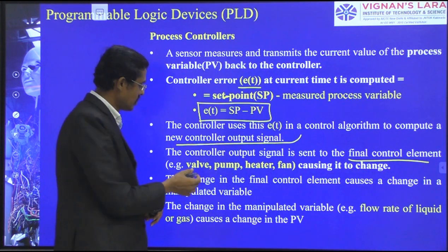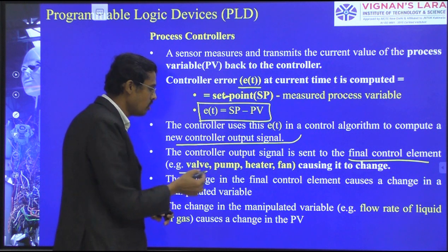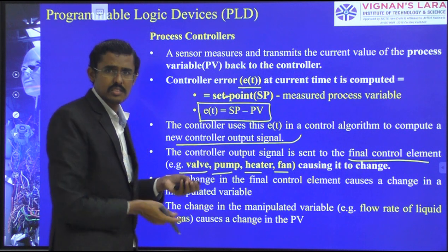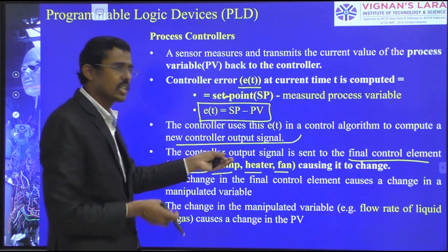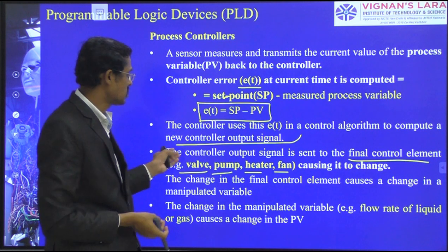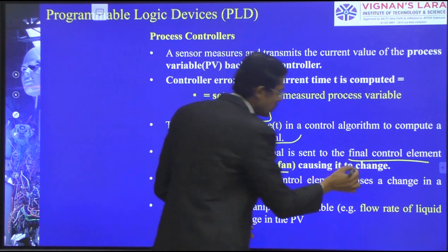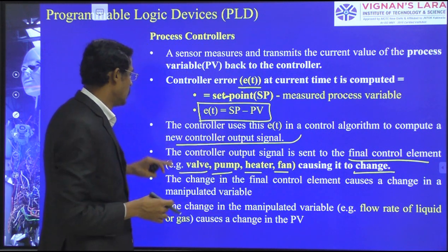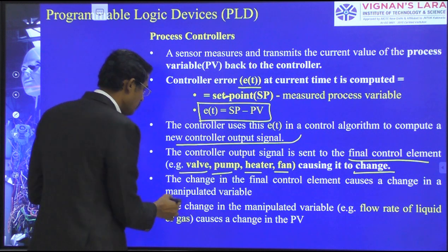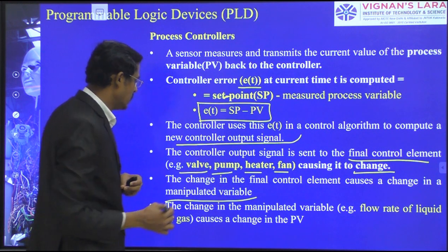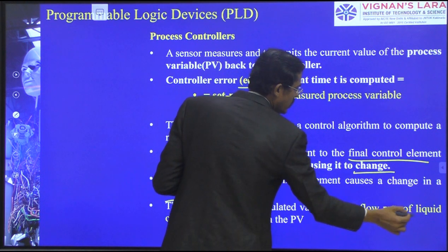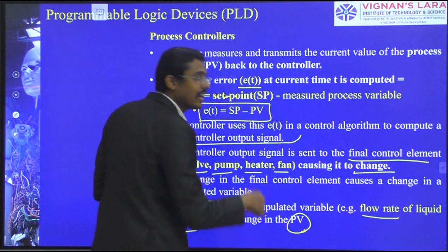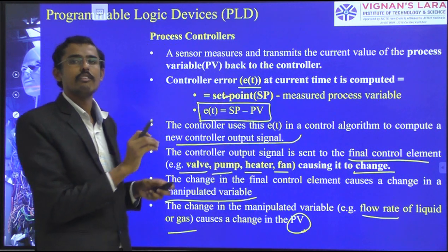The controller output signal is sent to the final control elements in the plant — such as valves, pumps, heaters, fans, cylinders, pistons, or ignition systems — to control speeds and other variables. This causes a change in the manipulated variable, for example the flow rate of a liquid or gas, which in turn causes a change in the process value, ultimately keeping it fixed at the desired constant value.